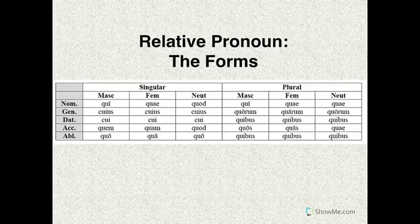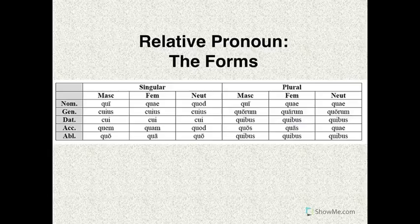For the dative, we have cui going all the way across in the singular, and then quibus going all the way across for all genders in the plural. For the accusative, we have quem, quam, and quod for the singular, and then quos, quas, and quae for the plural. For the ablative, we have quo, qua, and quo for the singular, and then quibus going across for all genders in the plural.